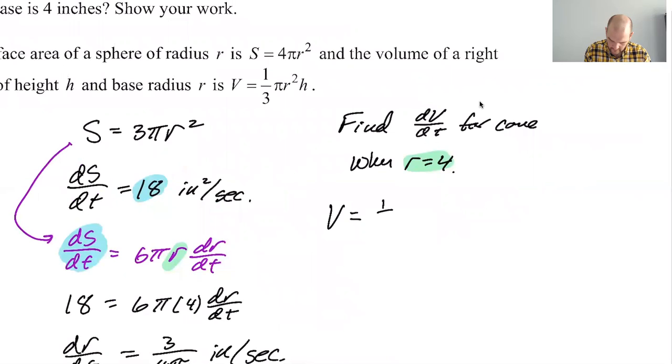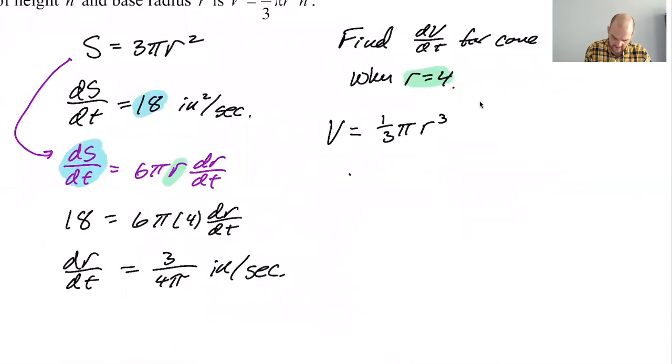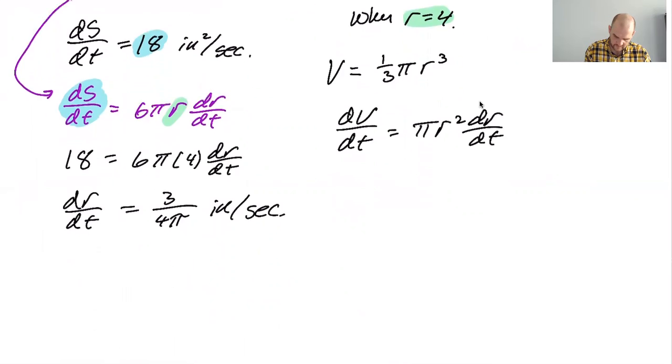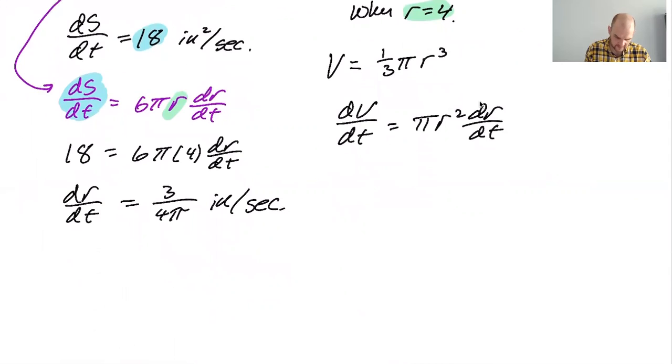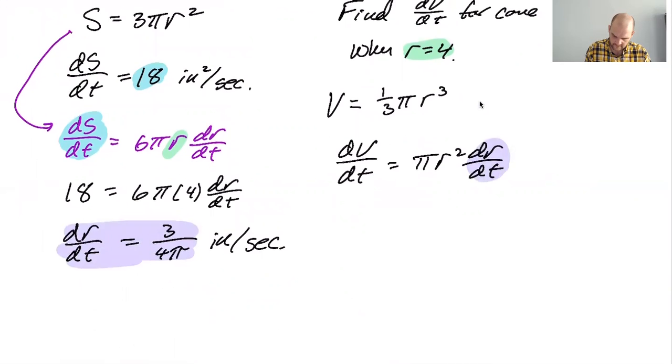So then I need to find dV/dt. It's going to be πr² dr/dt. And what do we know? We know that dr/dt is this and we know that r equals 4. So let's substitute in and see what we get.